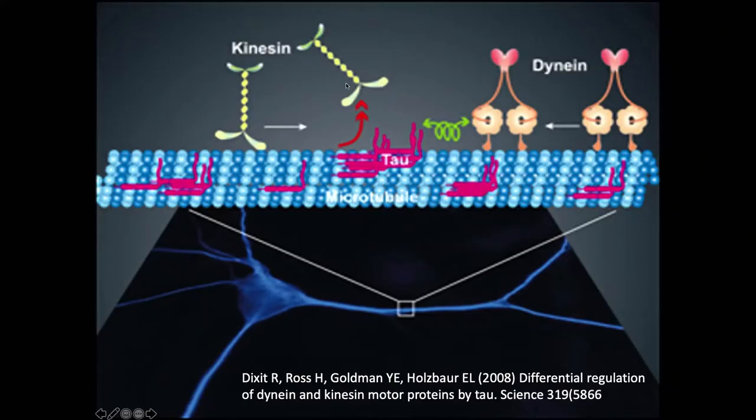It looks like tau — a microtubule-associated protein well known for other reasons — bound at specific locations on the microtubule acts as traffic signals, telling motor proteins to leave here and bring their dopamine decarboxylase or whatever is needed to a particular synapse. So the placement of tau on the microtubule may be a coding mechanism for memory and synaptic plasticity.